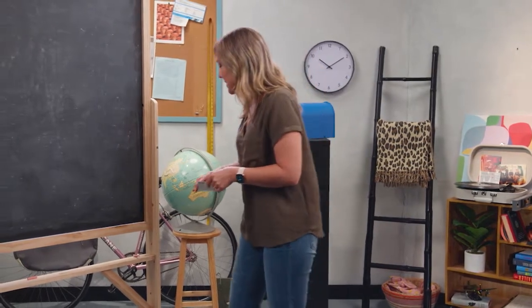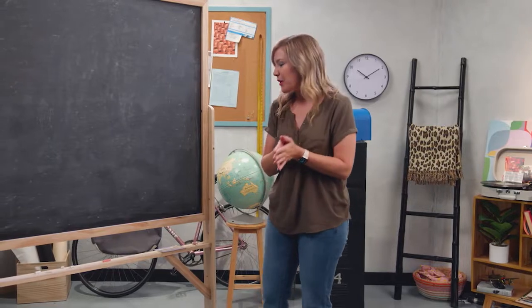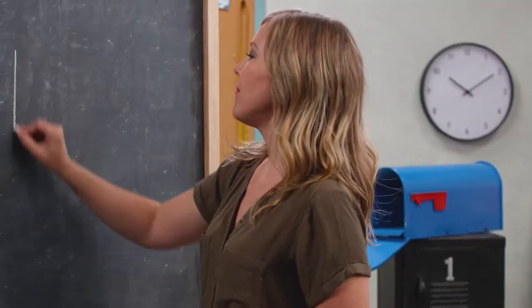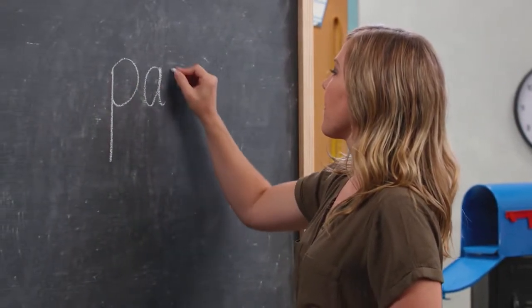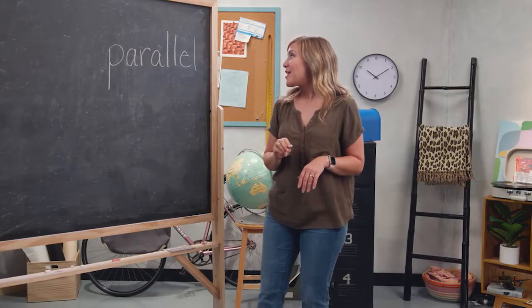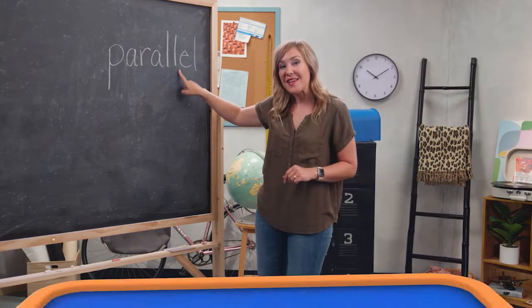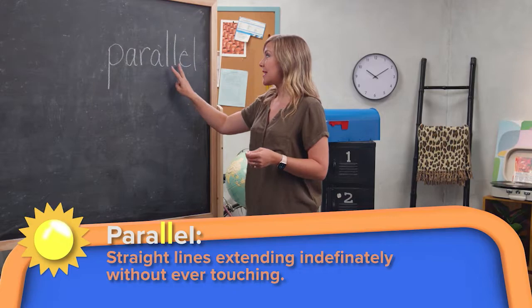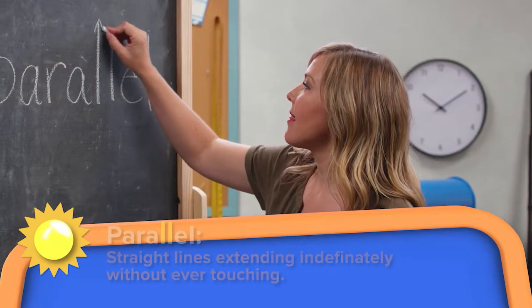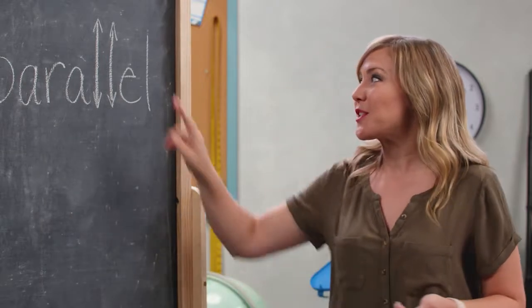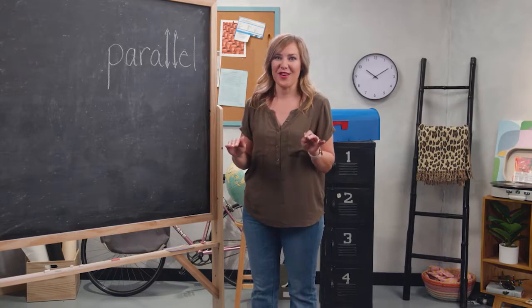When I was in elementary school trying to remember those words, I noticed something: when you write the word 'parallel,' the two L's in the word are actually a set of parallel lines. Parallel lines are two lines that never touch. Remember, a line extends indefinitely in both directions, so we can put little arrows to show that they go on and on forever.